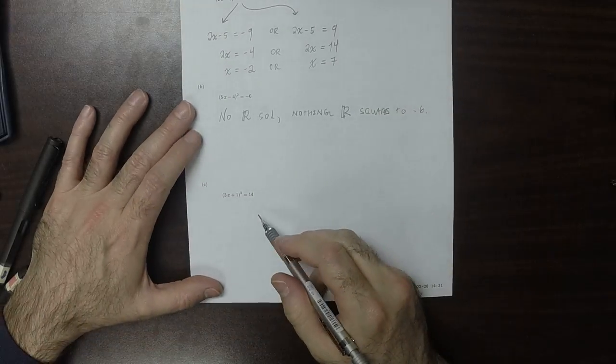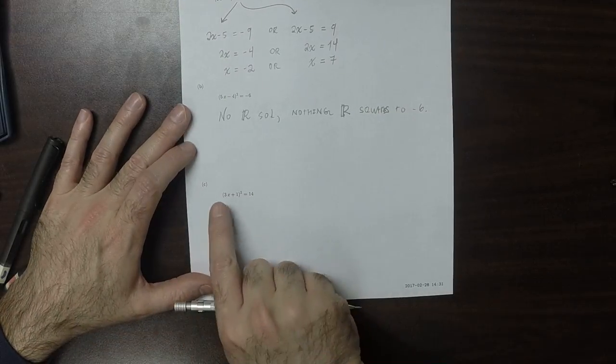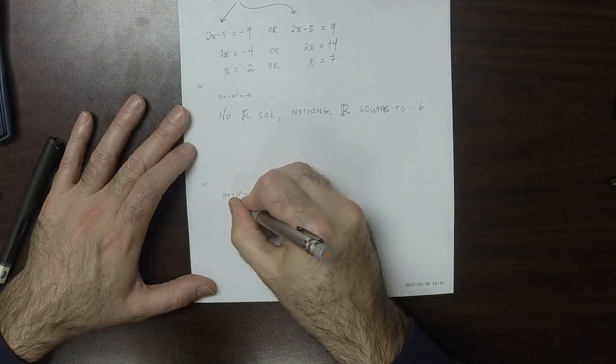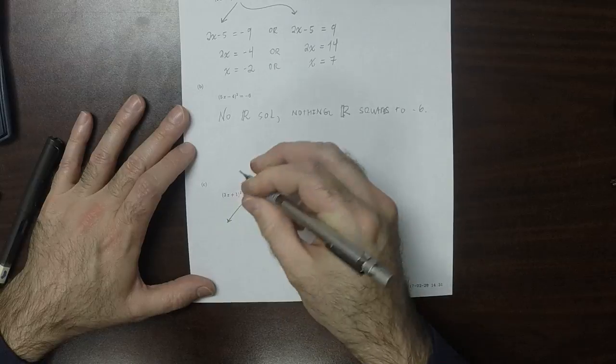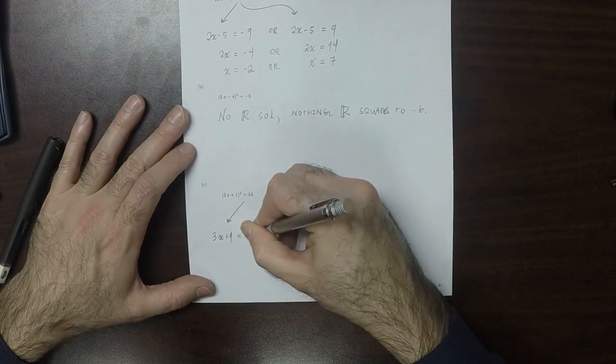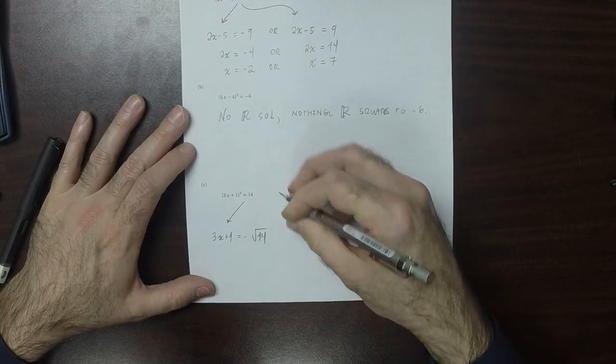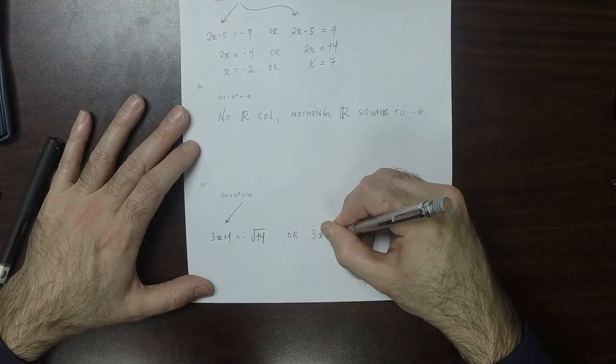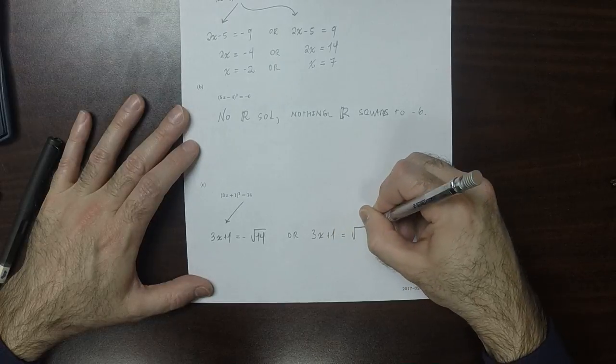And then for this one, we're squaring something and we want it to become 14. So there's two possibilities. It must be the case that 3x plus 1 is negative square root 14, or 3x plus 1 is the square root of 14.